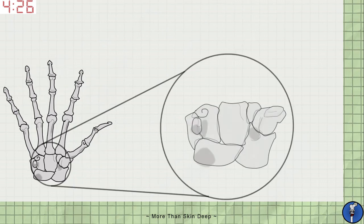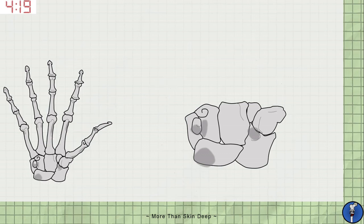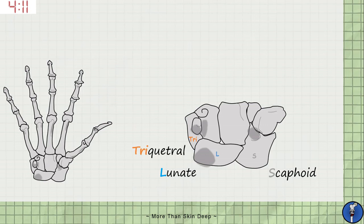Taking a closer look at the carpal bones, we can see that there are eight in total and they articulate with each other using simple, plain joints. On the proximal row, from lateral to medial, we have the boat-shaped scaphoid, the moon-shaped lunate, the three-sided triquetrum and the small pisiform bone, which sits just anterior to the triquetrum. The scaphoid has a prominent tubercle that sticks out anteriorly.